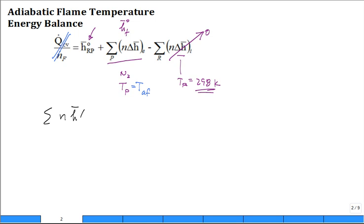You just have that the sum of the stoichiometric coefficients times the molar enthalpy of each of the components evaluated at that adiabatic flame temperature minus the evaluation at the reference temperature, sum over all the products, plus the enthalpy of combustion on a molar basis is equal to zero.